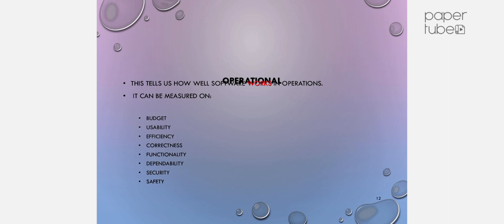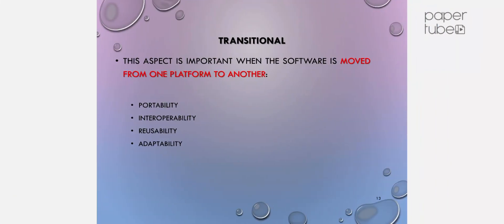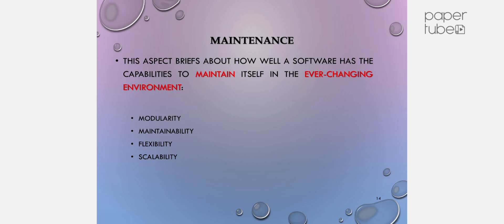Operational characteristics refer to how well the software works in use. Transitional characteristics refer to how well the software moves across environments — Portable, Interoperable, Reusable, and Adaptable. Maintenance is also essential because requirements change day by day. According to changing requirements, we need to modify the software. Maintenance characteristics include Modularity, Maintainability, Flexibility, and Scalability. This is the scope of software engineering.